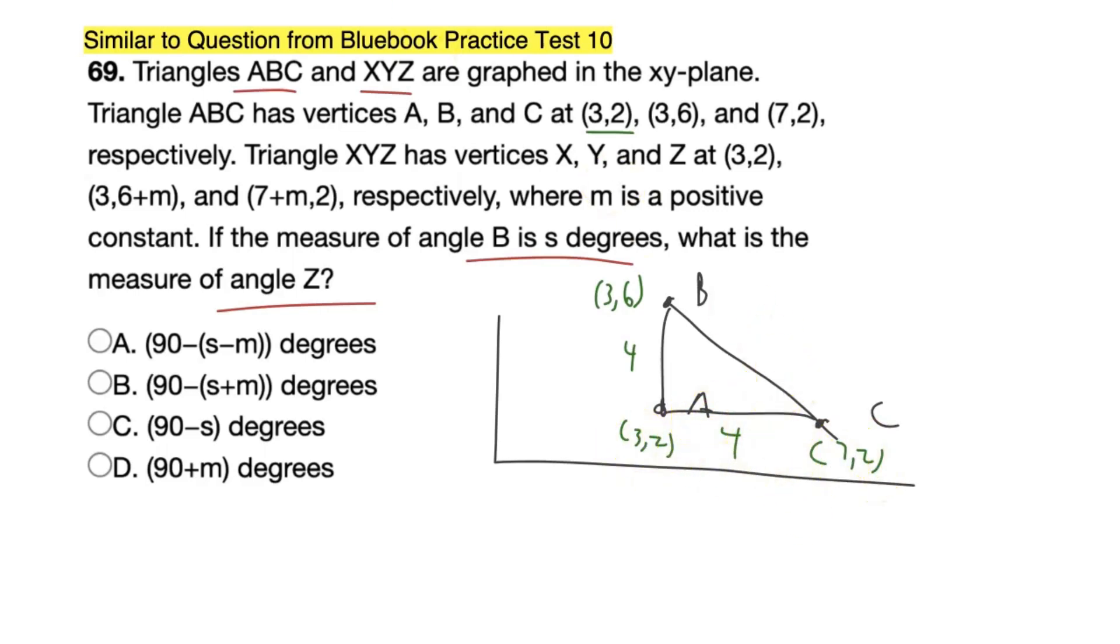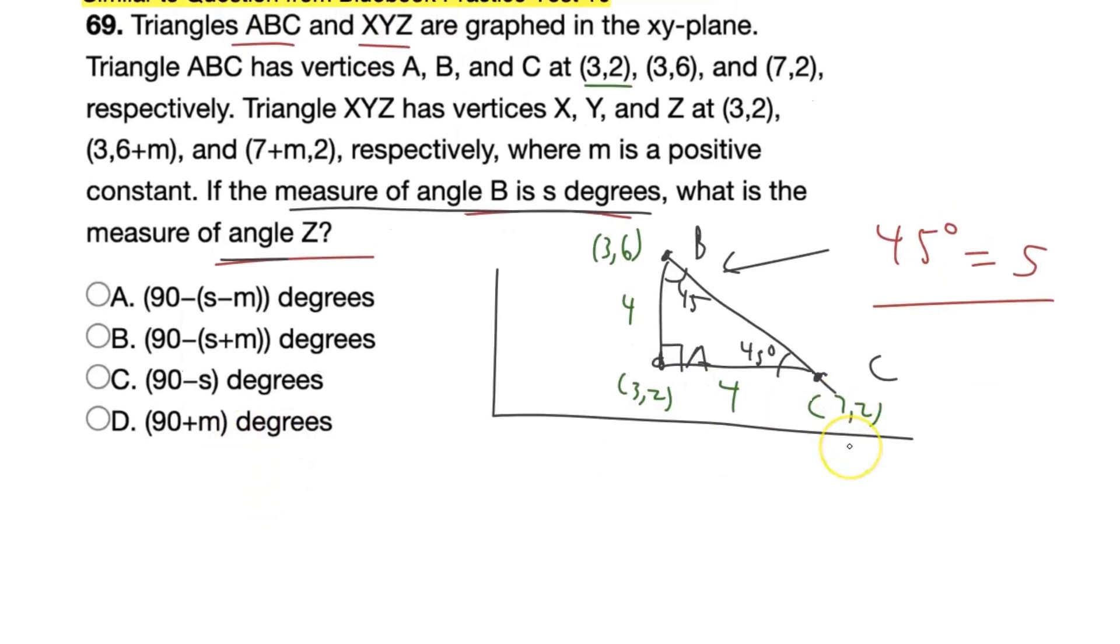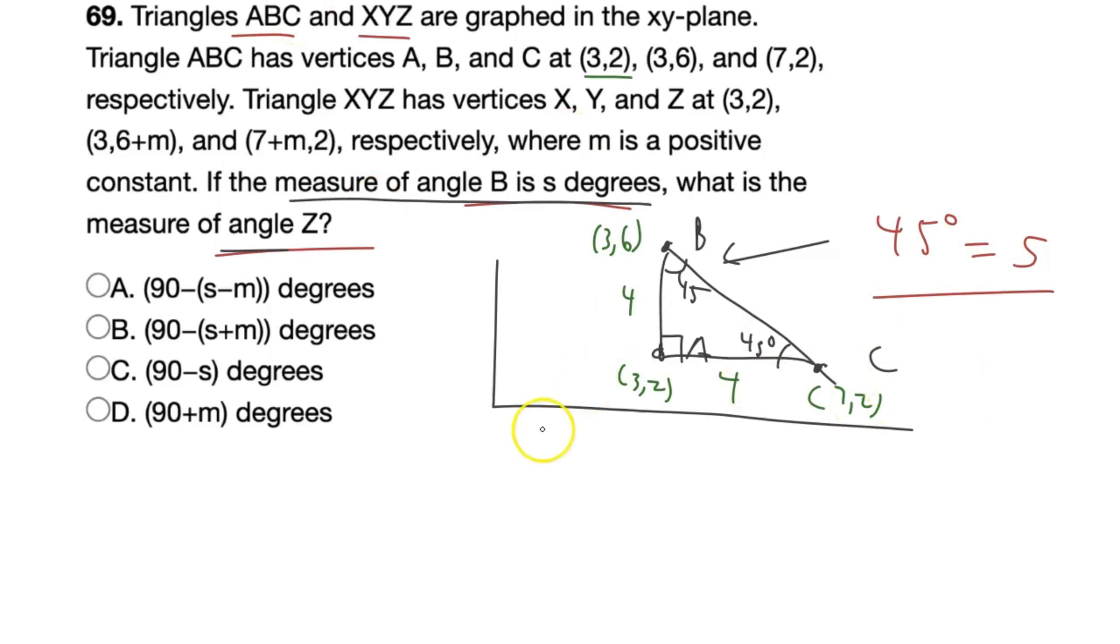So what do we need to find? Well, this is actually interesting because you'll see that A, the coordinates of A, are (3,2). The coordinates of B are (3,6). And so we can actually find the side length of the triangle. So from (3,2) to (3,6), that's an increase of 4 units. That's a side length of 4. And then C here is (7,2). So the side length of this side is also 4 because 7 minus 3 is 4. And so, interestingly enough, we have an isosceles triangle.